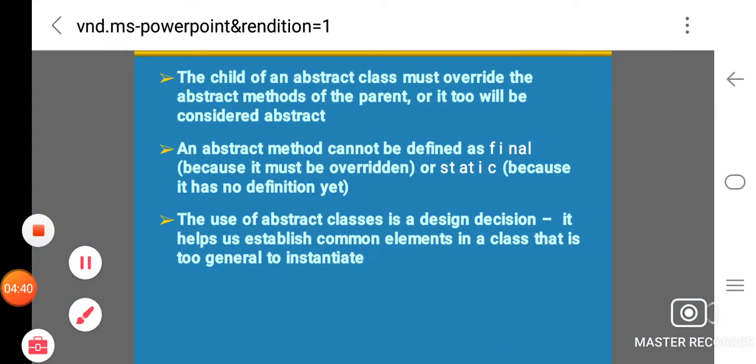The child of an abstract class must override the abstract methods of the parent, or it too will be considered abstract. An abstract method cannot be defined as final because it must be overridden, or static because it has no definition yet. The use of abstract classes is a design decision. It helps us establish common elements in a class that is too general to instantiate.